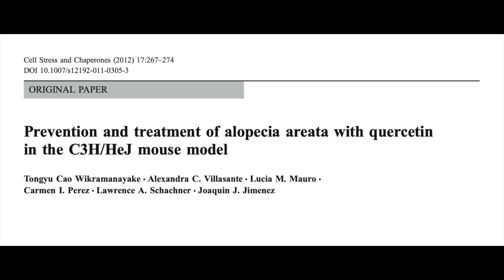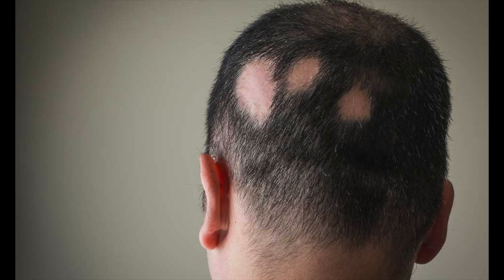The first attempt to use quercetin to treat hair loss was in a study from 2012 titled 'Prevention and Treatment of Alopecia Areata with Quercetin in the C3H-HeAEJ Mouse Model.' As you can tell from the title, it is an animal study looking at alopecia areata — patchy hair loss thought to be due to an autoimmune disorder where a person's own antibodies attack their own hair follicles. In this study, the investigators decided to test quercetin in specially bred mice that have a high incidence of alopecia areata.